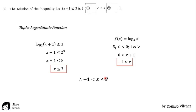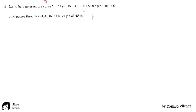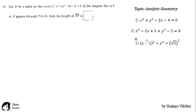Next problem. Let a be a point on the curve x square plus y square minus 2x minus 4 equal to 0. If the tangent line to c at a passes through point p(4,3), then the line of ap is. So the topic here is analytic geometry. This curve is a conic. We complete the squares. Here is the x minus 1 square. So finally we can realize that it is a circumference.